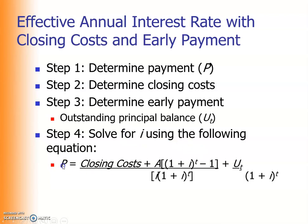In this case, P equals closing costs plus A times [(1 + i)^t - 1] / [i times (1 + i)^t], where t is the period at which the loan is paid off early.